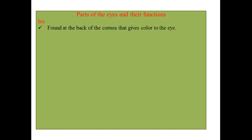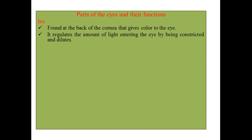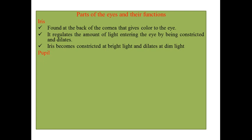Let's see the other parts of our eye. The iris is found at the back of the cornea and gives color to the eye. The role of the iris is to regulate the amount of light that enters the inner part of our eye. It does this by constricting at bright light and dilating at dim light.